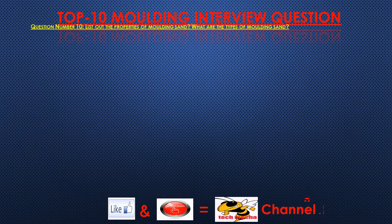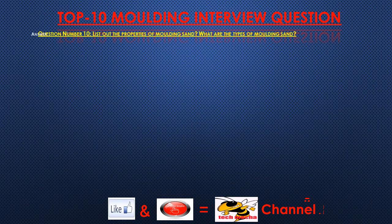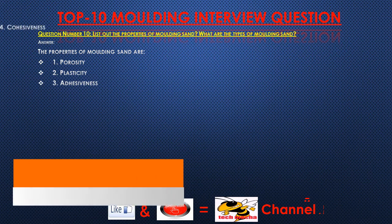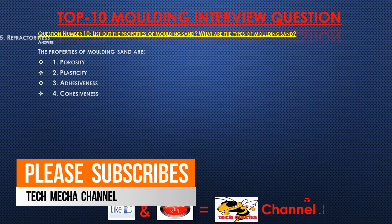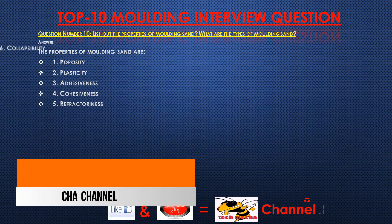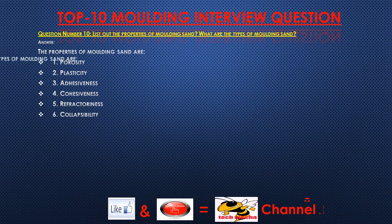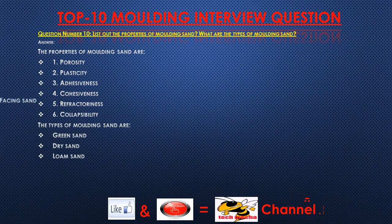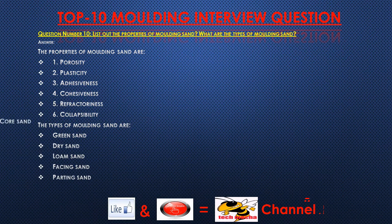Question number ten: List out the properties of molding sand. What are the types of molding sand? Answer: The properties of molding sand are porosity, plasticity, adhesiveness, cohesiveness, refractoriness, and collapsibility. The types of molding sand are green sand, dry sand, loam sand, facing sand, parting sand, and core sand.